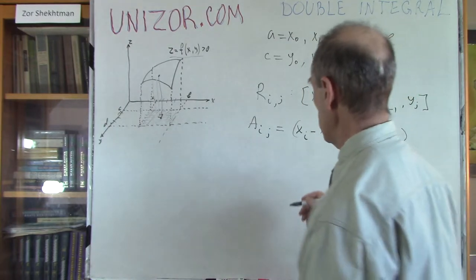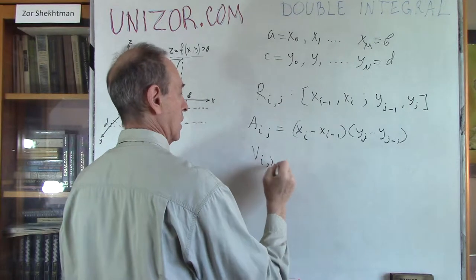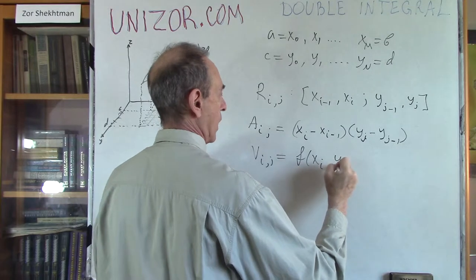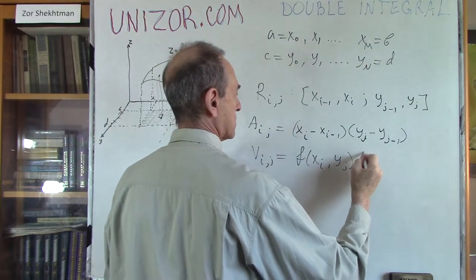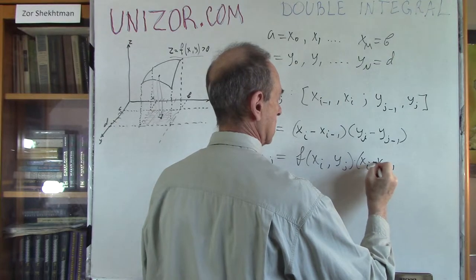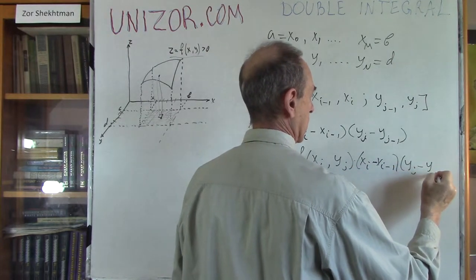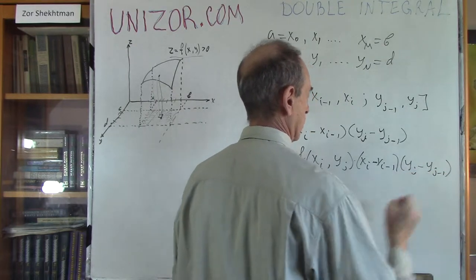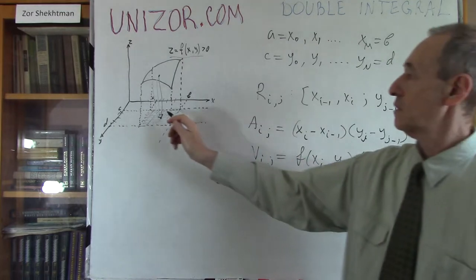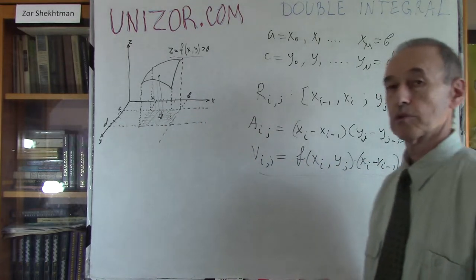So my volume V_{i,j} is equal to f(x_i, y_j) times (x_i − x_{i-1}) times (y_j − y_{j-1}). That's the volume of one particular rectangular parallelepiped.